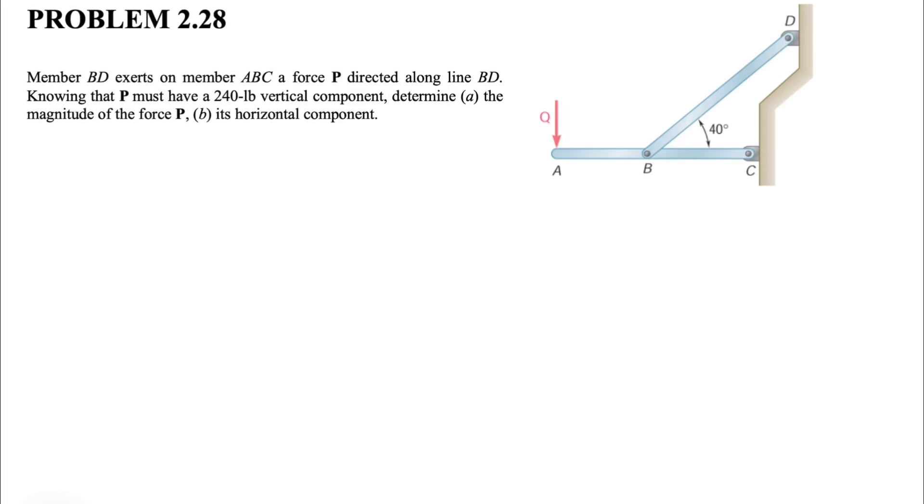Okay, welcome back guys. We have another question from chapter 2 of the Beer-Johnston textbook. We have the member BD that exerts on member ABC a force of P that is directed along line BD.